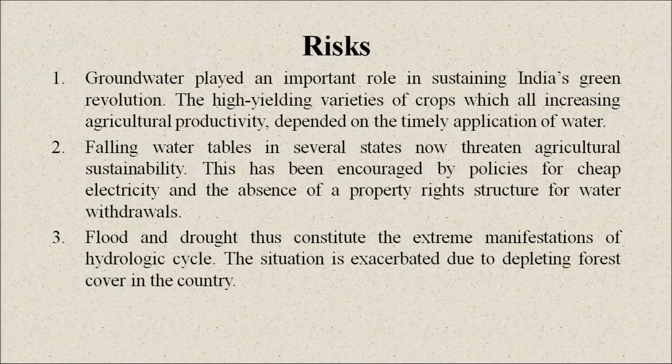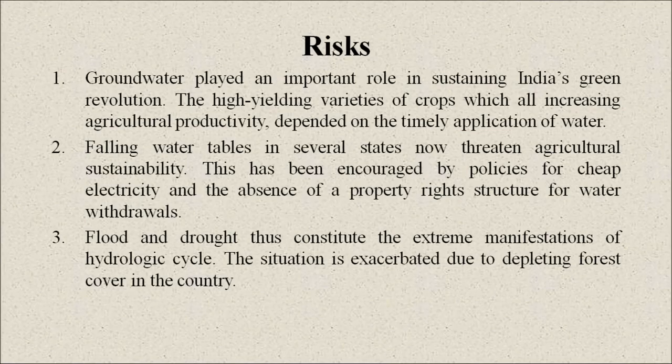The groundwater plays an important role in sustaining India's green revolution, as high-yielding varieties of crops depend on the timely application of water. Falling water tables in several states now threaten agricultural sustainability. This has been worsened by policies for cheap electricity and the absence of a property rights structure for water withdrawal. Flood and drought constitute the extreme manifestations of the hydrologic cycle, a situation exacerbated by depleting forest cover in the country.